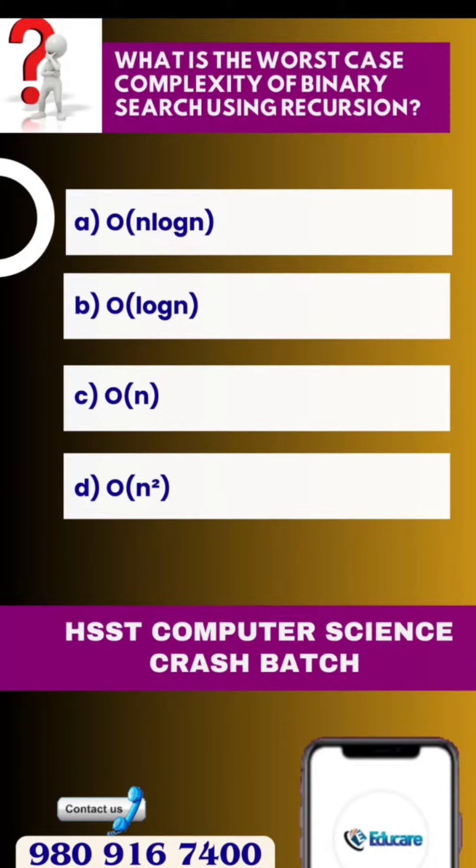Option A: O(N log N). Option B: O(log N). Option C: O(N). And Option D: O(N²).